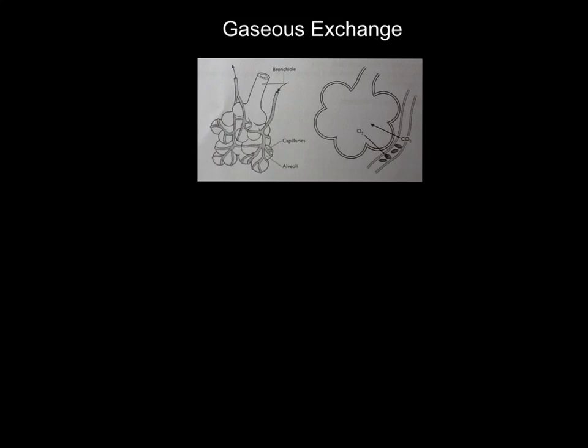Welcome to the video on gaseous exchange. This diagram should be familiar from your workbooks. There are two gases we're interested in: oxygen, our mate, and CO2, our enemy. CO2 is a toxin and an acid, so if it builds up too much in your system, that's serious trouble. What we've got in this diagram is a very basic diagram of a clump of alveoli, with a bronchiole and round alveoli structures.